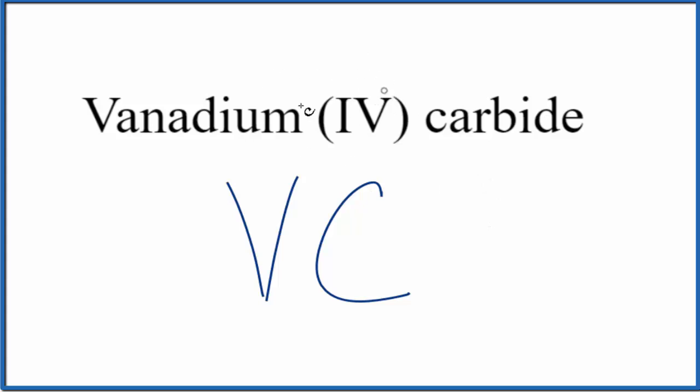So we know that the vanadium, because of this Roman numeral here, it's going to be a plus four. For the carbide here, carbide is usually considered to be minus four. So these charges balance out. They give us a net charge of zero. And the formula for vanadium carbide is VC.